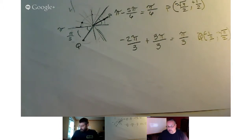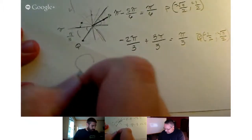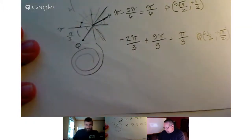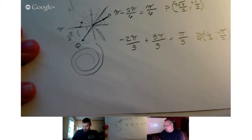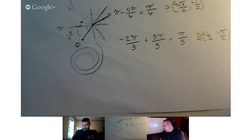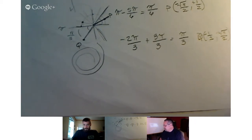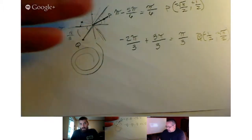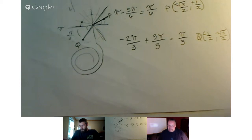There was also finding terminal points for large values of T, where T is our radians and we've got multiple loops. In that case you just keep subtracting out 2 pi until you get it down to something less than 2 pi. Then it goes back to exactly what we just did. That finishes up sections 6.1 and 5.1.